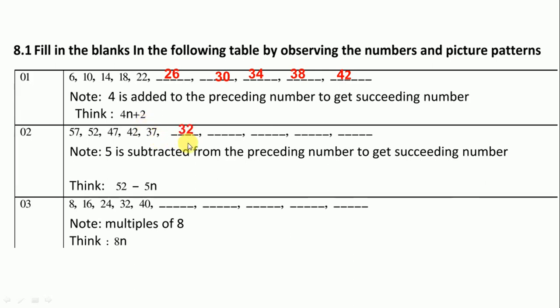Next subtract 5 from 32, we get 27, likewise 22, 17, and 12. Here is one general form is given for this series for thinking. Question number third, notice: multiple of 8.